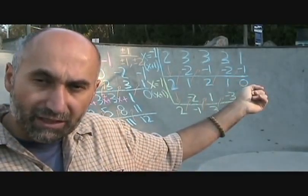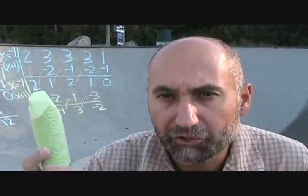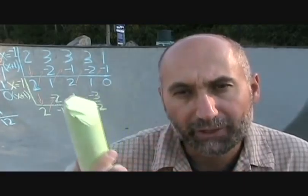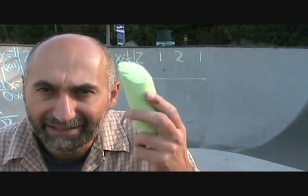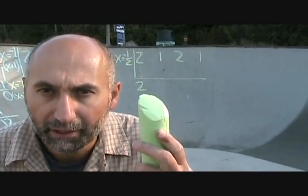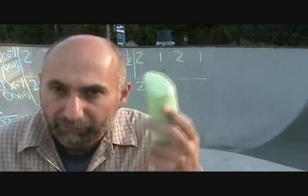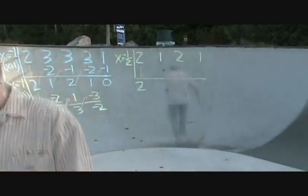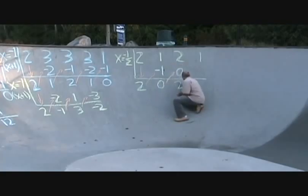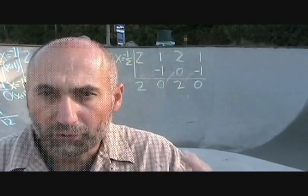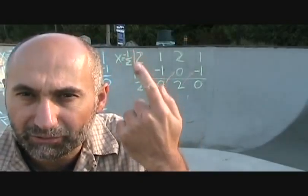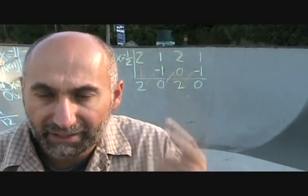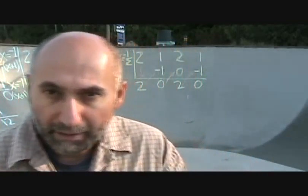I'm going to shift the camera and do the synthetic division over here. I'll transfer all the numbers and try x equals negative 1/2. The 2 comes straight down, then 2 times negative 1/2 is negative 1. Going through all the zigzags, we get a remainder of zero. So x equals negative 1/2 is a factor of this polynomial, and therefore a factor of the original polynomial.